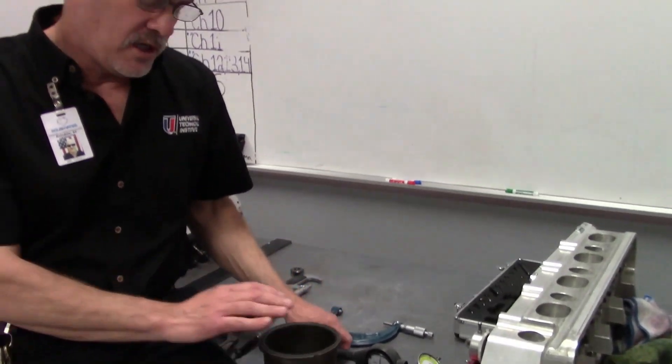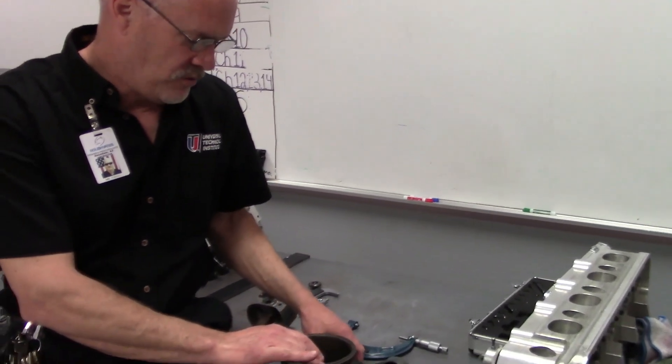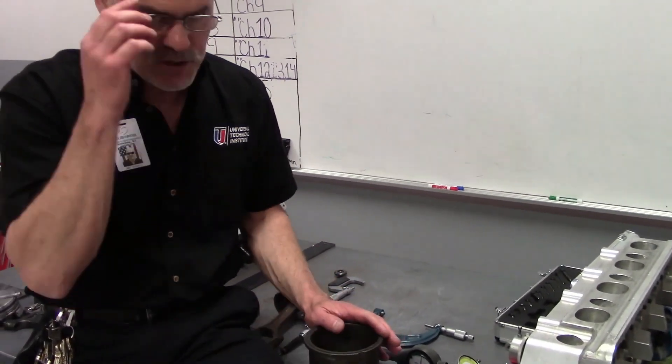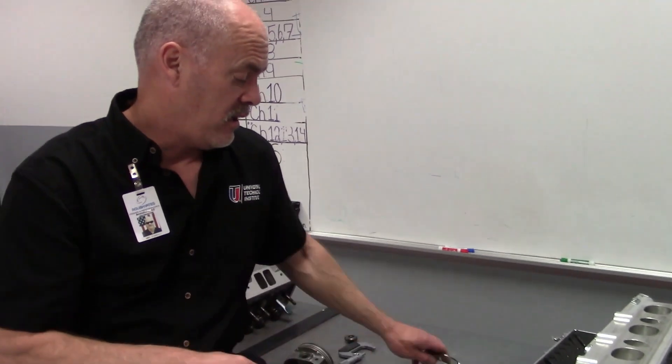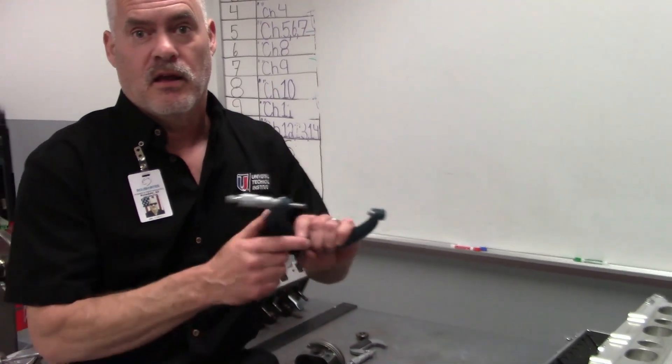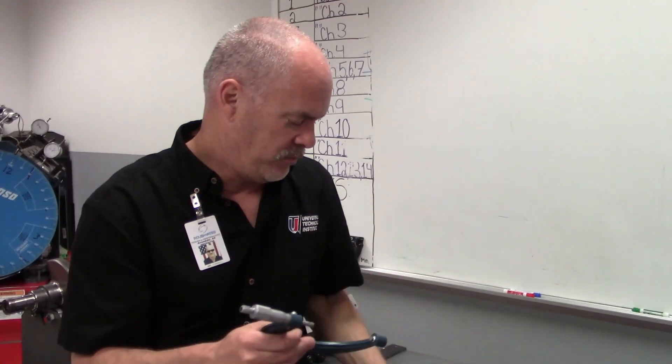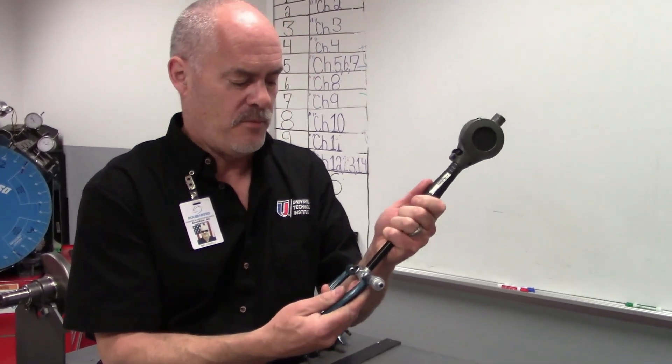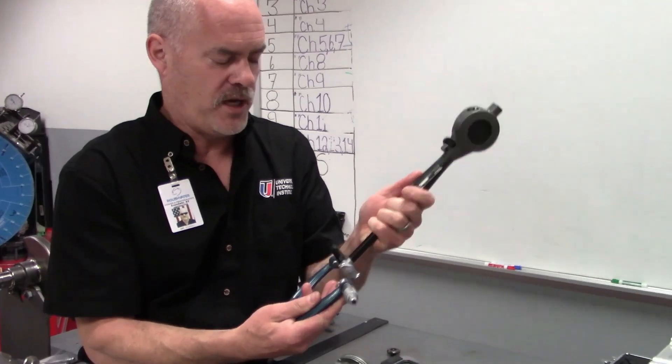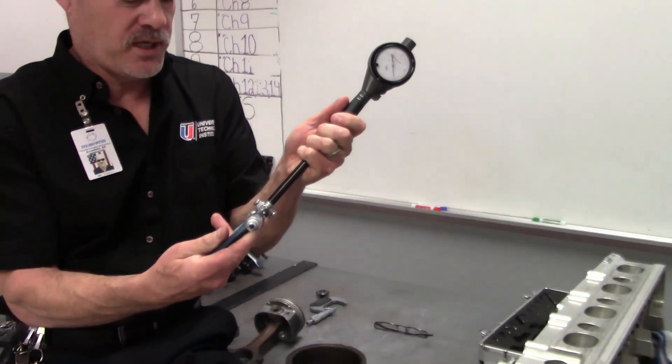The other thing we do if we want to check the size of this cylinder, we have to look up our specifications in the book and we have to set our mic for our spec right here. Then we lock it in place and then we go ahead and put this between the two fingers of the mic.